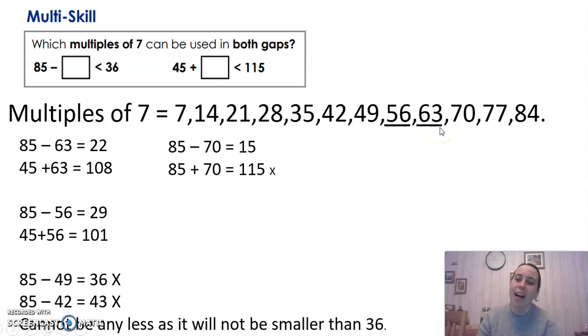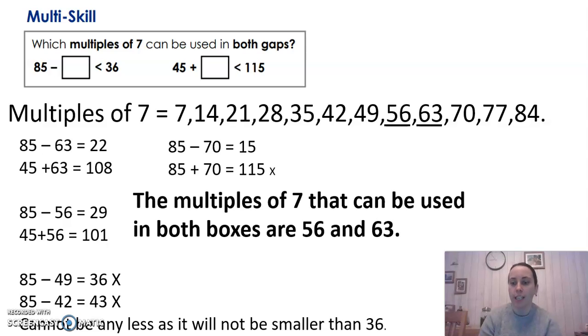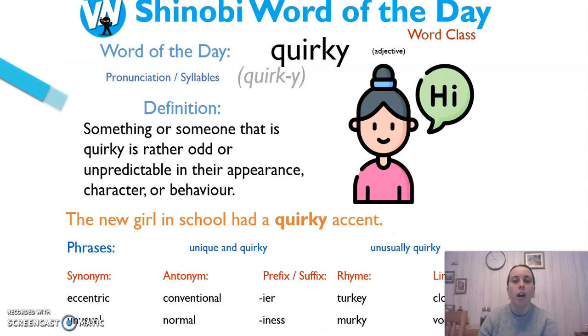So the two multiples I got were 56 and 63. I hope you did well as well. Let me know if you managed to solve that. And I wrote it as a sentence. The multiples of seven that can be used in both boxes are 56 and 63. I love a good sentence at the end. Maybe you should start writing in sentences as well at the end, just so you understand what you have done.